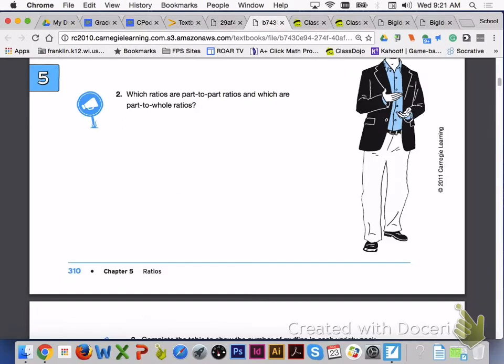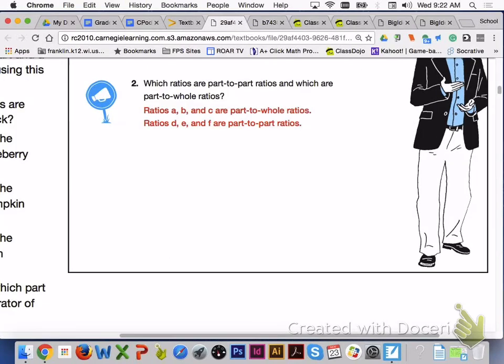Answer number 2 with your group members. Ratios A, B, and C are part-to-whole ratios, and ratios D, E, and F are part-to-part ratios.